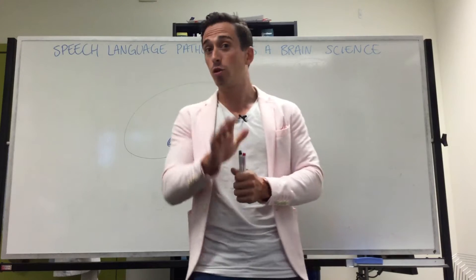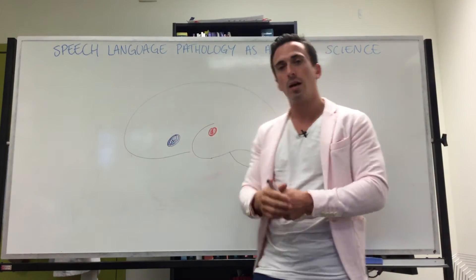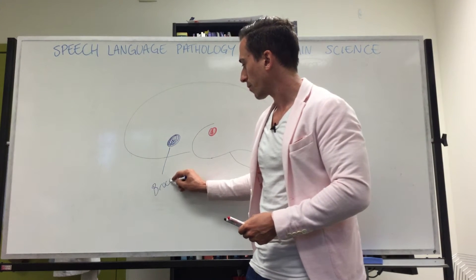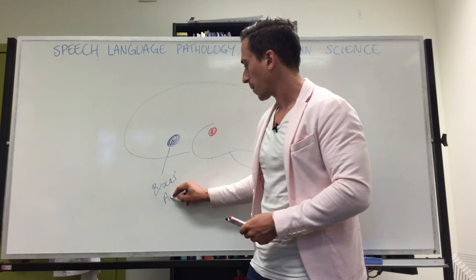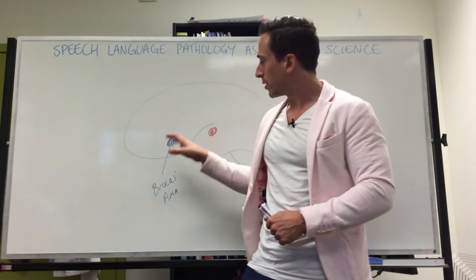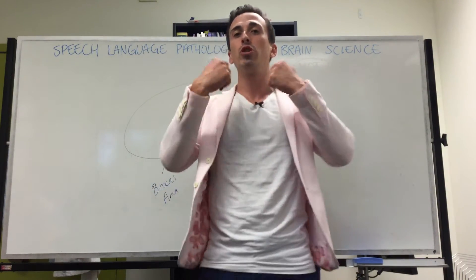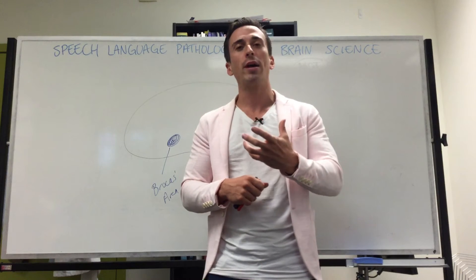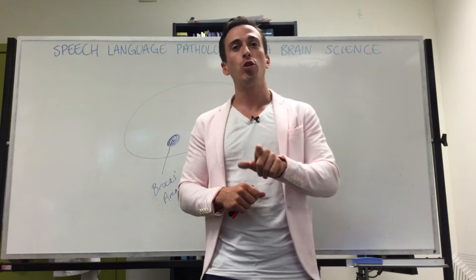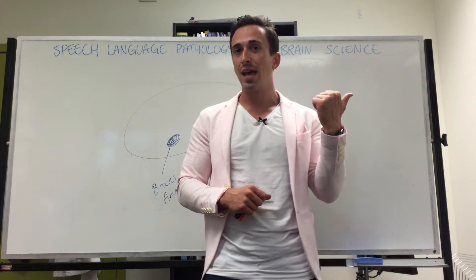He identified a part of the brain which we term Broca's area, which is in the left frontal lobe. If we draw it up, this blue dot here represents Broca's area, where his patients had lesions or damage to this particular area that resulted in issues with being able to produce language — issues with the motor activity of language.